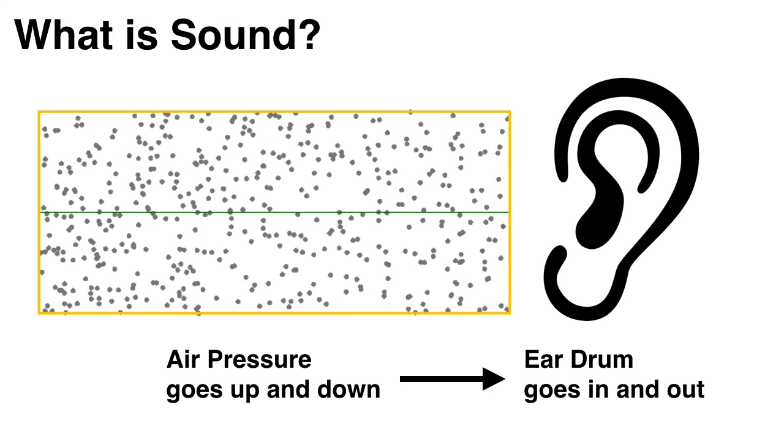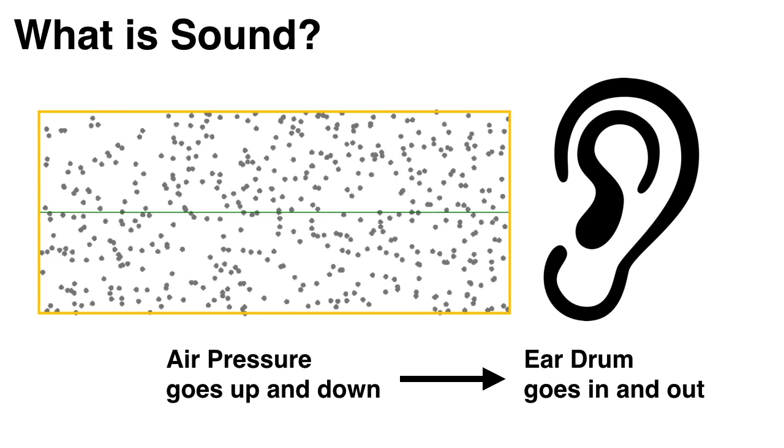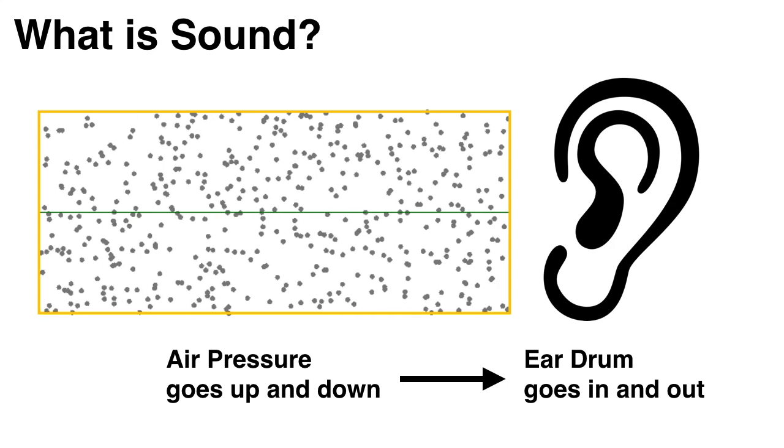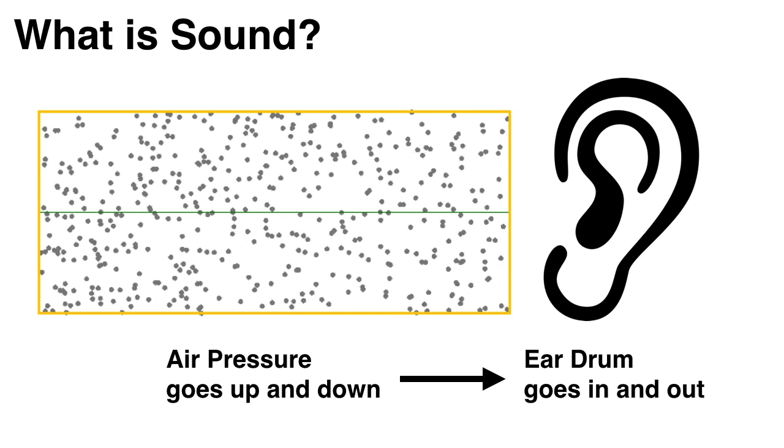When the waves reach our ears, the air pressure goes up and down, and this makes our eardrums go in and out at the same rate. Our brain analyzes these signals and interprets them as sound.